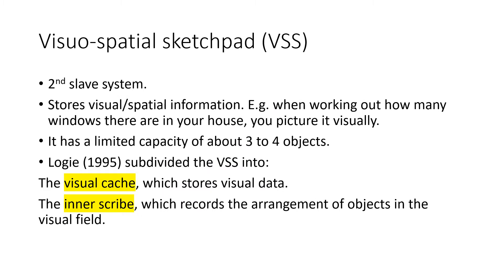The second slave system is the visuospatial sketchpad, which stores visual and spatial information. For example, when working out how many windows are in your house, you picture it in your mind and go around counting them. It has a limited capacity of about three to four objects. Logie in 1995 subdivided this into the visual cache, which stores visual data, and the inner scribe, which records the arrangement of objects in the visual field.